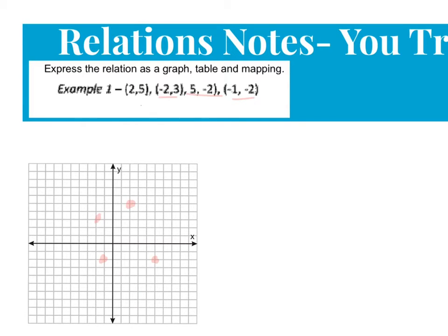The next thing asks us to find a table. So in a table, we're going to separate our x's and our y's and put it in a little table like this. So 2 correlates with 5, negative 2 correlates with 3, 5 is ordered and paired with negative 2, and negative 1, and negative 2.